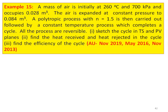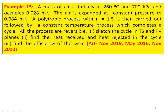A mass of air initially at 260 degree Celsius and 700 kilo Pascal occupies 0.028 meter cube. The air is expanded at constant pressure to a volume of 0.084 meter cube. A polytropic process with n equal to 1.5 is then carried out, followed by a constant temperature process which completes the cycle. The processes are reversible. Sketch the cycle on T-S and P-V planes, find the heat received, heat rejected in the cycle, and find the efficiency of the cycle.